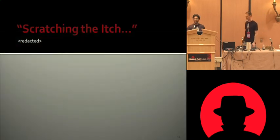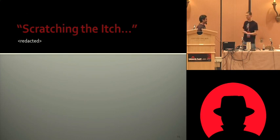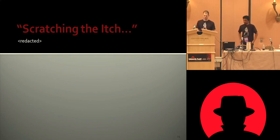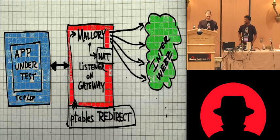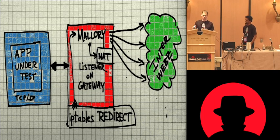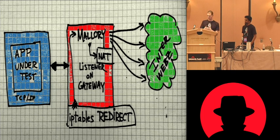So we're going to introduce Mallory now, talk a little about the architecture, and then get into some of the demos. Basically this is our diagram — it's really straightforward. You have an application you're testing, you have a Mallory gateway somewhere in the middle, and then you have access to the internet or maybe a test network.